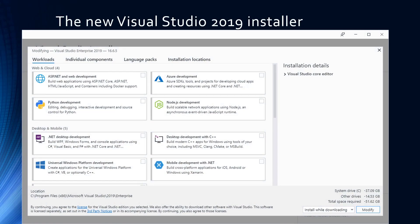When you install Visual Studio 2019, like 2017, we have this new component-style installer. On its own you're only going to get the core editor, which will allow you to view and edit code, look at web pages and things like that, but not do much anything else. We'll go through in this session what you need to get started and what components you'll need for all the different platforms.